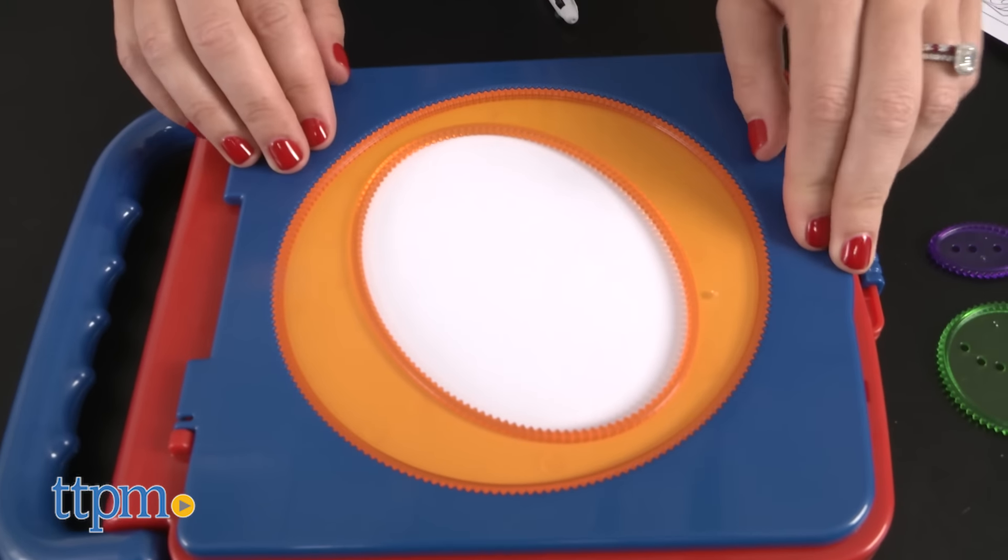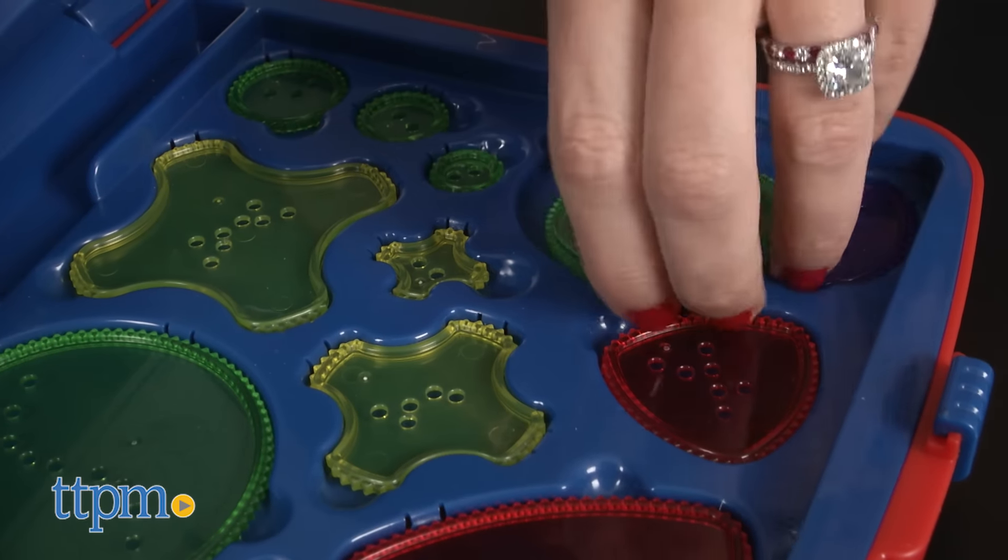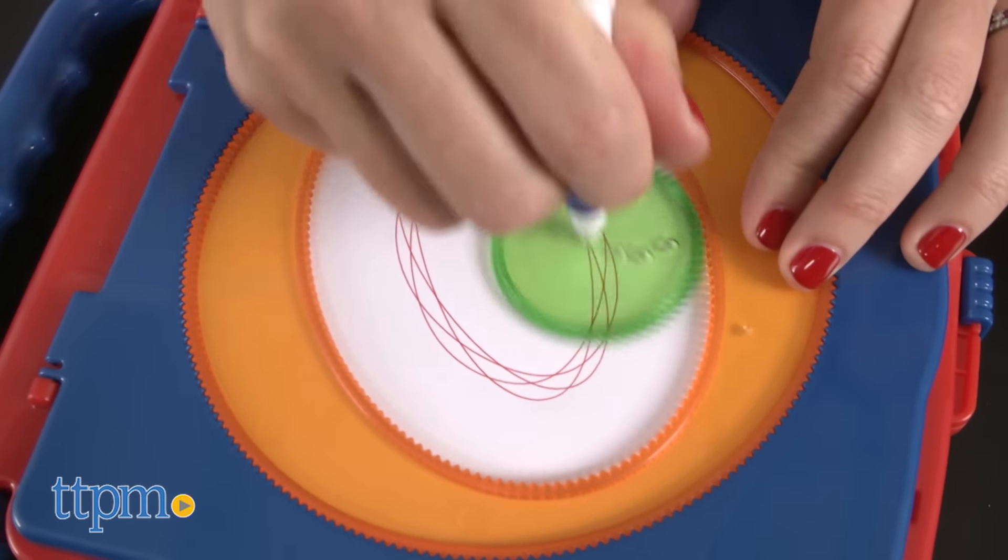Kids insert a sheet of paper into the case, choose a color from the pen and a spiral designer, and get creative using the designer as a guide.